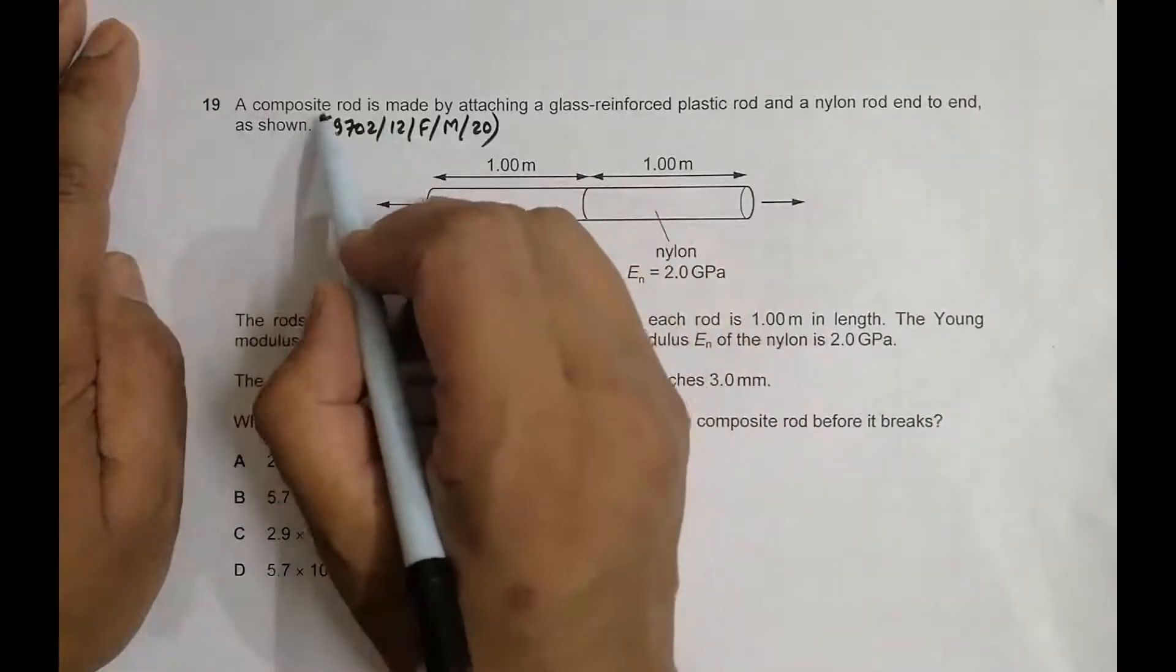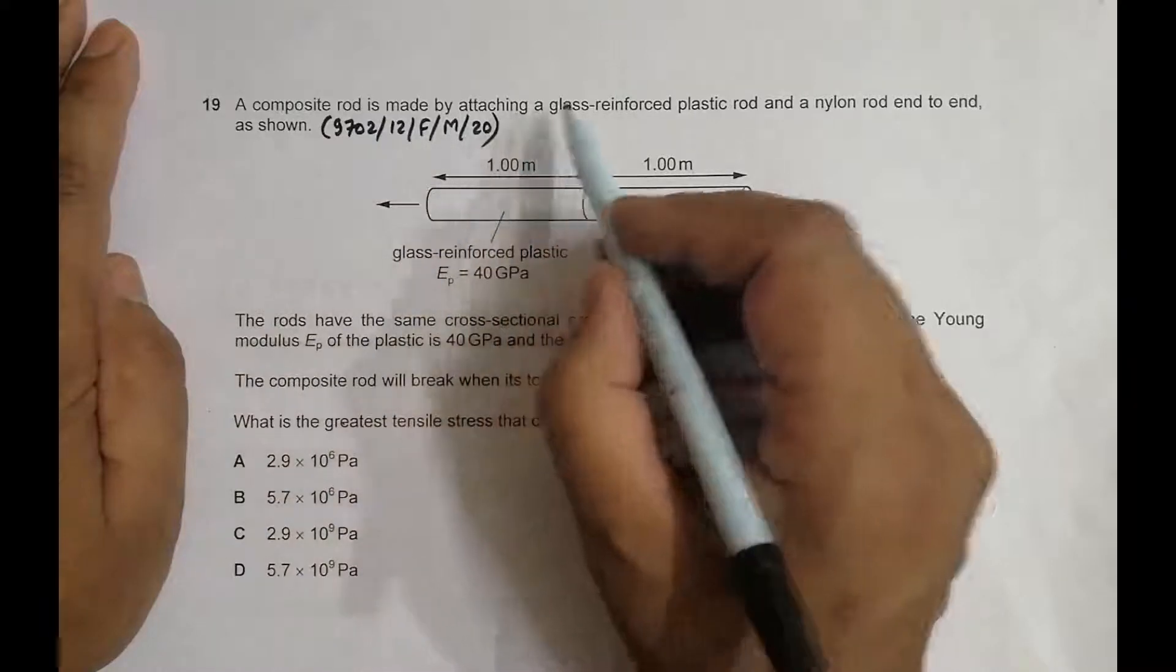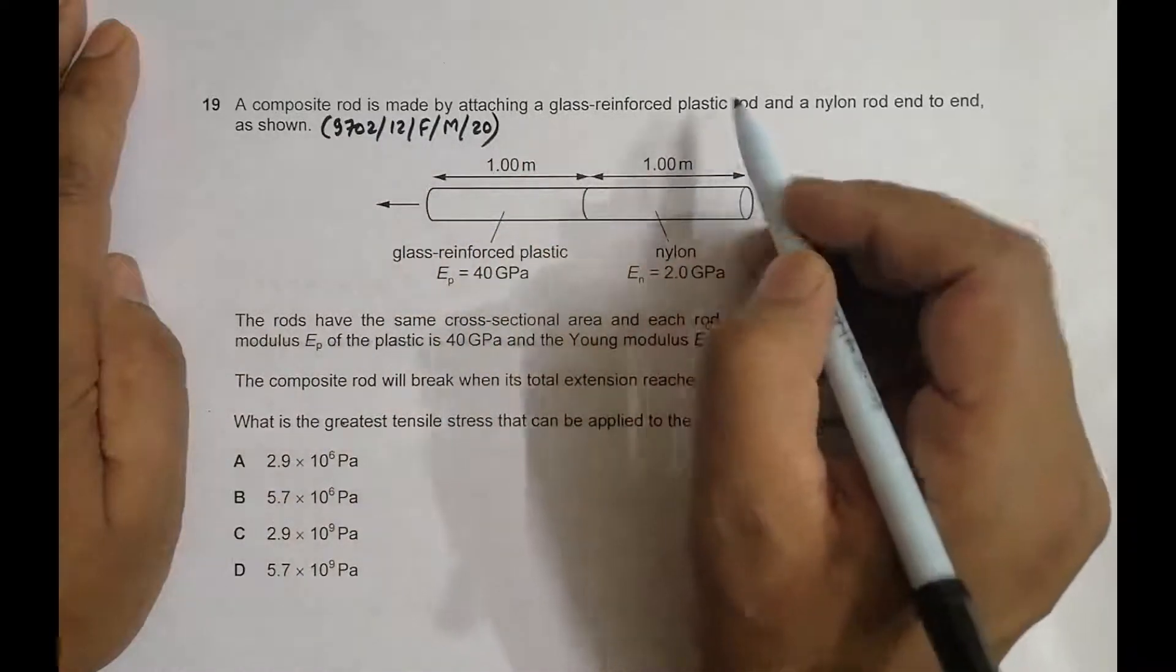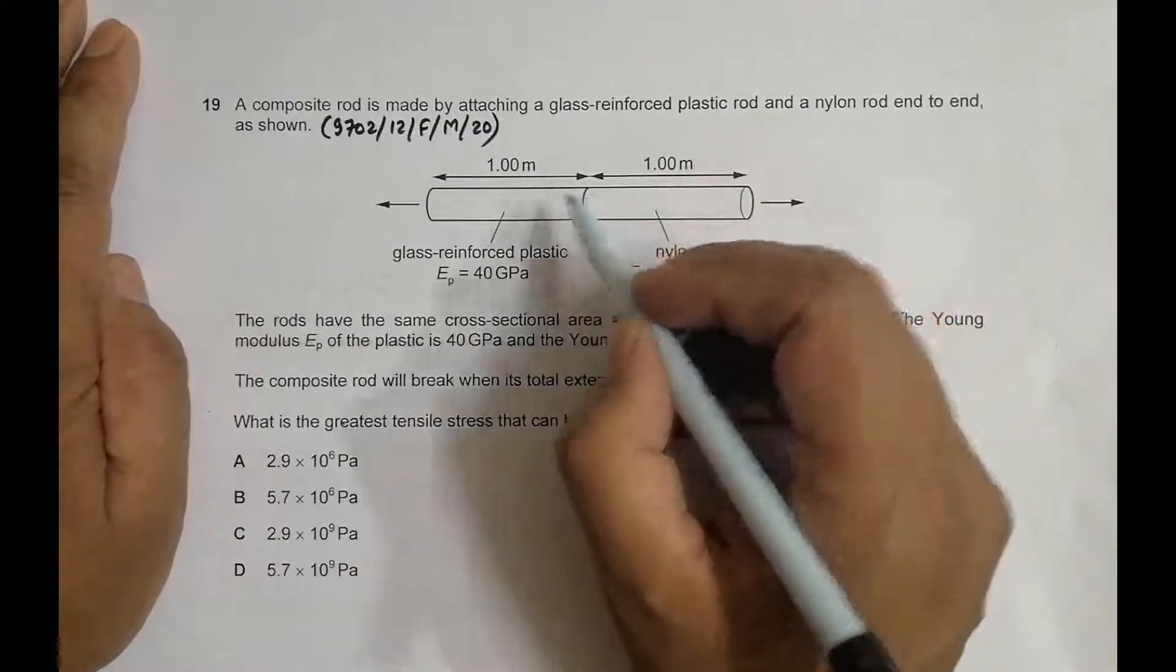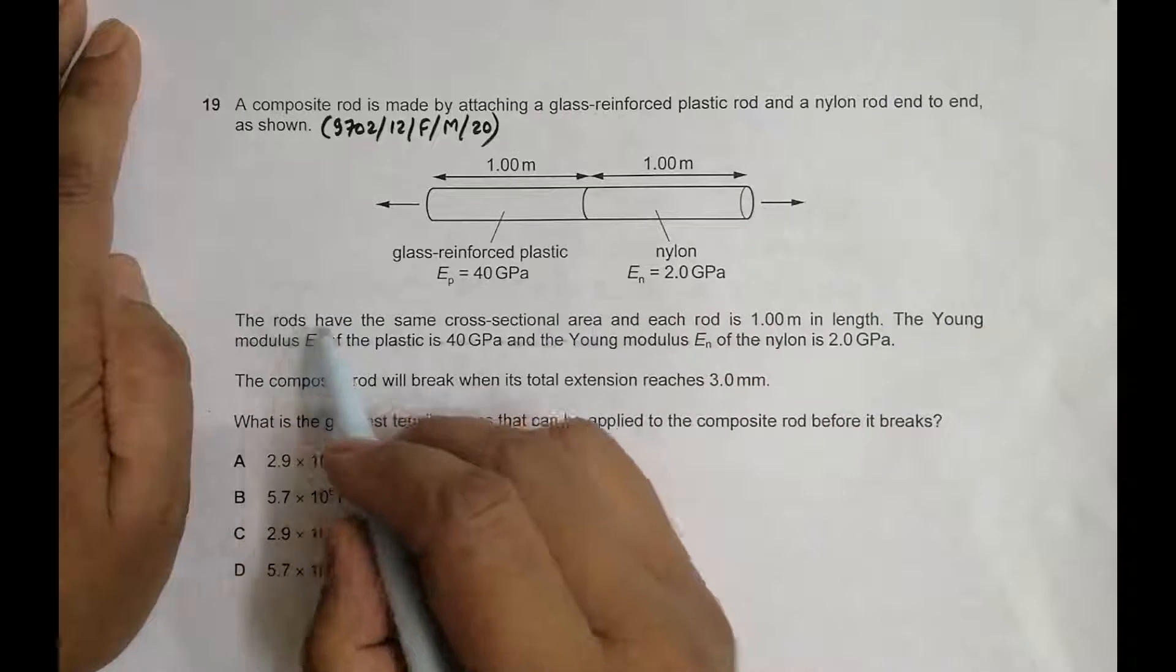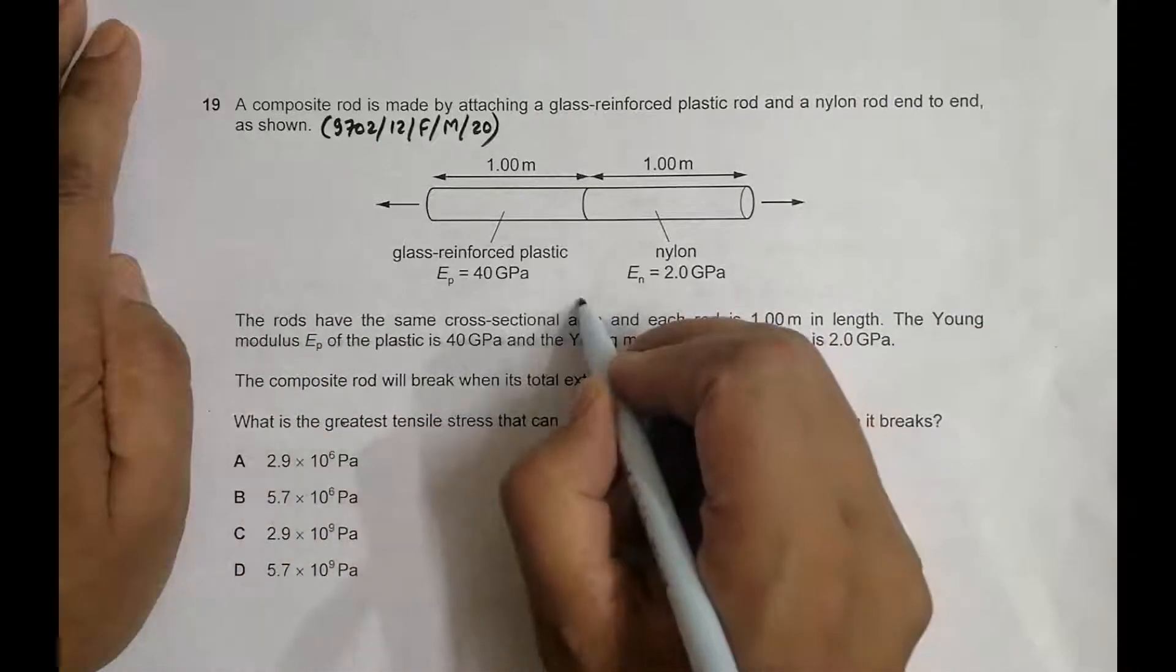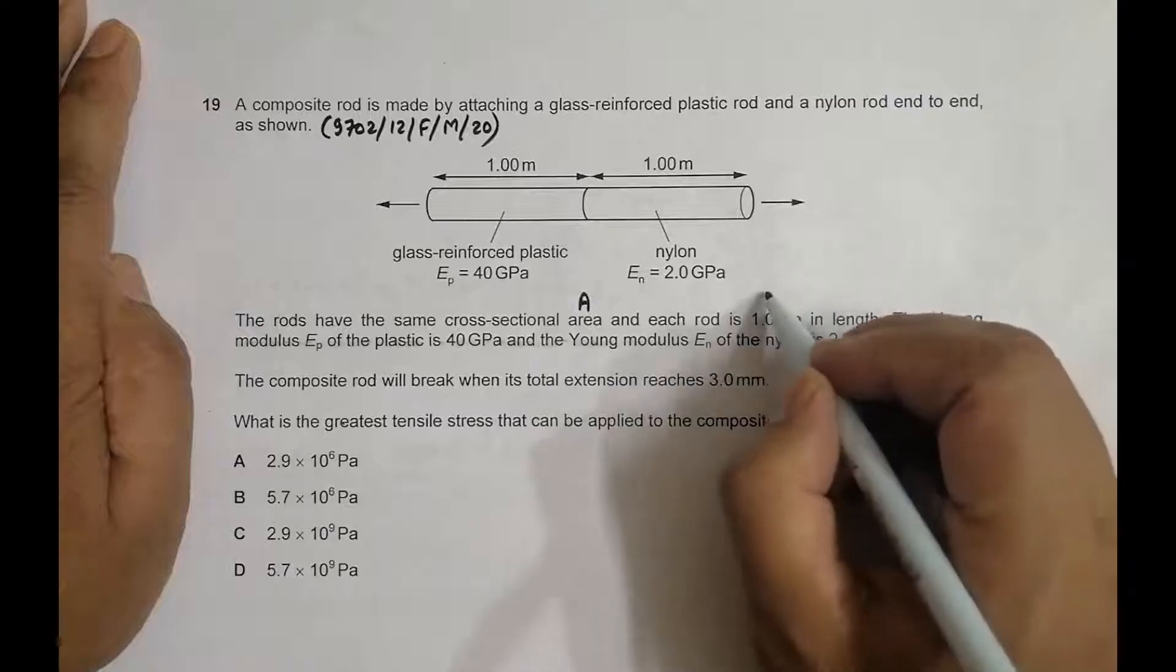A composite rod, meaning a rod made of two substances, is made by attaching a glass-reinforced plastic rod and a nylon rod end to end. The rods have the same cross-sectional area A, and each rod is 1.0 m in length.